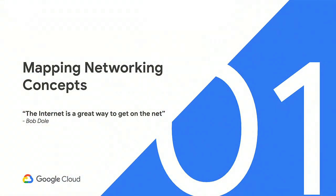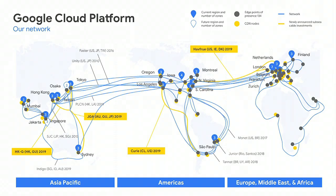This is the current state of Google's global backbone network. We have our own private backbone network — one of the largest private backbone networks in the world. One of the unique benefits of cloud networking is that within a few minutes, through configuration you define, this basically becomes your infrastructure. You can extend your on-premise network environment literally across the globe based on which cloud regions you deploy compute and other workloads into.